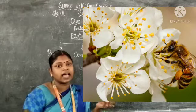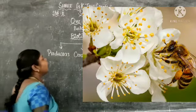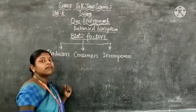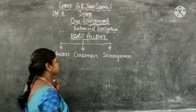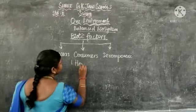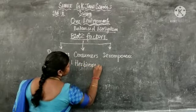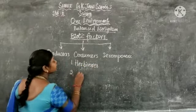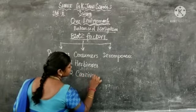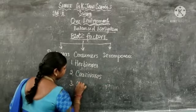Consumers are divided into three types. One is herbivores, another one is carnivores, and the next one is omnivores.